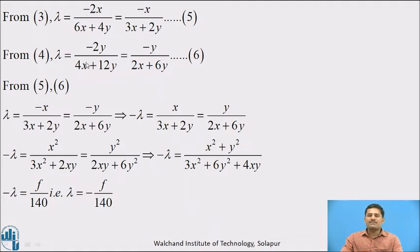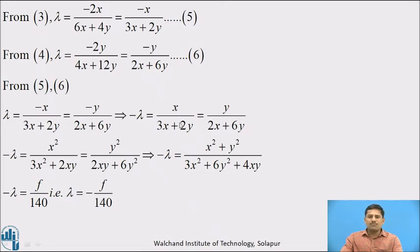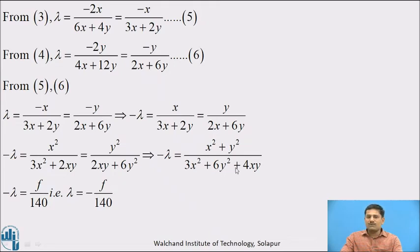From equations 5 and 6, both are values of lambda, so they must be equal: −x/(3x + 2y) = −y/(2x + 6y). Multiplying by −1 throughout: x/(3x + 2y) = y/(2x + 6y). Multiplying and dividing the first term by x, and the second by y, we get x²/(3x² + 2xy) = y²/(2xy + 6y²). Adding these two quantities: −λ = (x² + y²)/(3x² + 4xy + 6y²). We can see that x² + y² is f from equation 1, and 3x² + 4xy + 6y² equals 140 from equation 2.